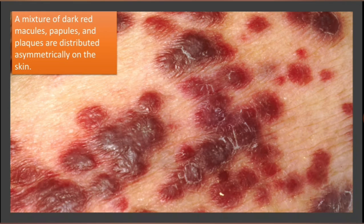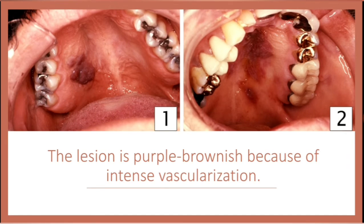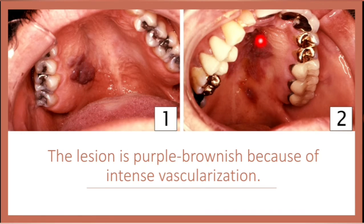Here you can see a mixture of dark red macules, papules, and plaques which are asymmetrically distributed, and you can see different sizes. In another image, you can see the lesions are purple-brownish because of intense vascularization. On the first image you can see an elevated lesion, and here it is flat.